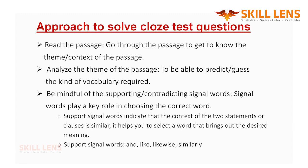The third approach is to be mindful of supporting or contradicting signal words. Signal words play a very important role in any paragraph. Support signal words indicate that the statements in the paragraph are similar — the author is talking about similarities between two clauses or statements. Few support signal words are: and, like, likewise, similarly, therefore, firstly, secondly, in addition to. These are commonly seen in paragraphs.